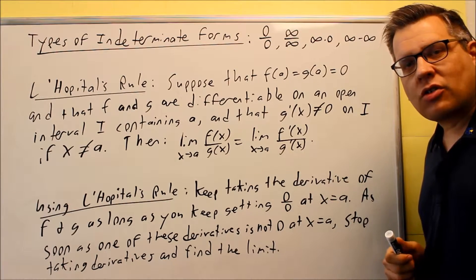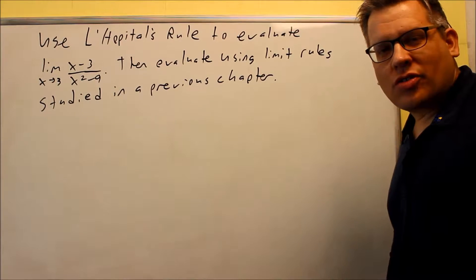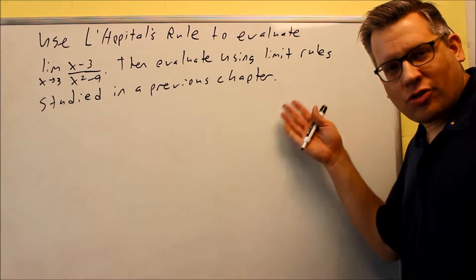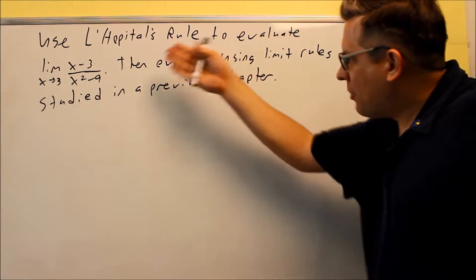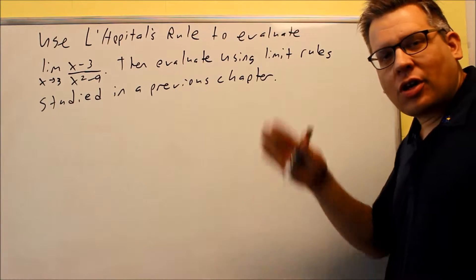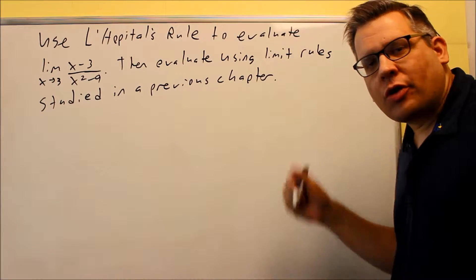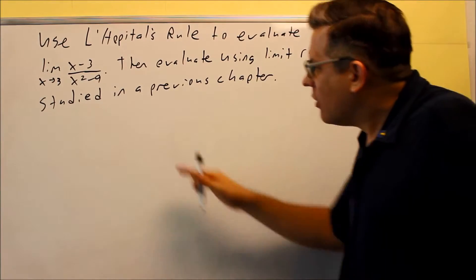So that's how L'Hôpital's Rule works. Just keep taking derivatives of top and bottom until you don't get 0 anymore. With that, let's go ahead and illustrate this with an example. We're going to do it with L'Hôpital's, but then we're also going to cover it using the methods we talked about in a previous chapter.